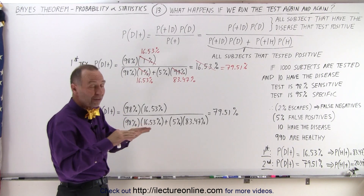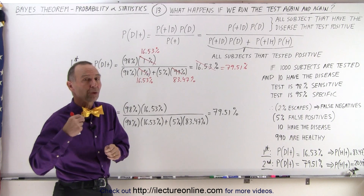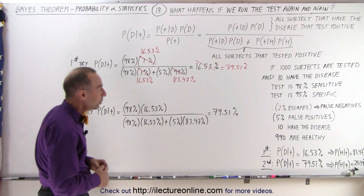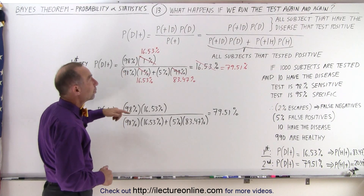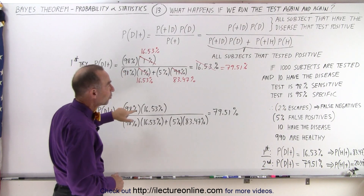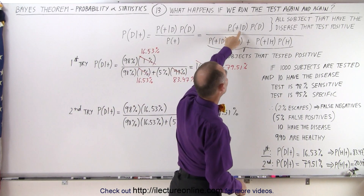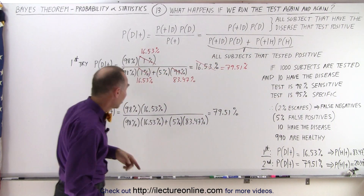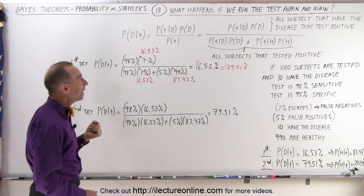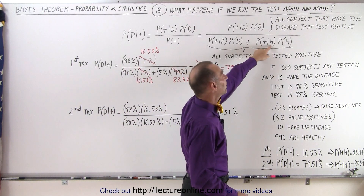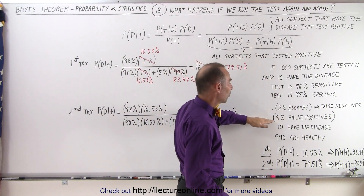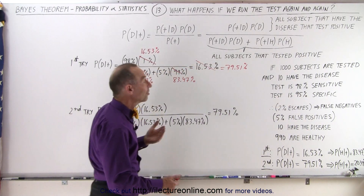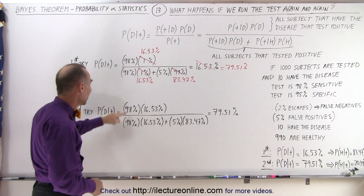Only those that tested positive twice in a row — let's test them a third time to see what would happen. What has changed? Well, the 98% stays the same, because the probability that if you have the disease you'll test positive is still dependent upon the sensitivity. That hasn't changed, that's still 98%. And the probability that if you are healthy you'll test positive — that's the false positive rate — that's still at 5%, because the specificity of the test is 95%.